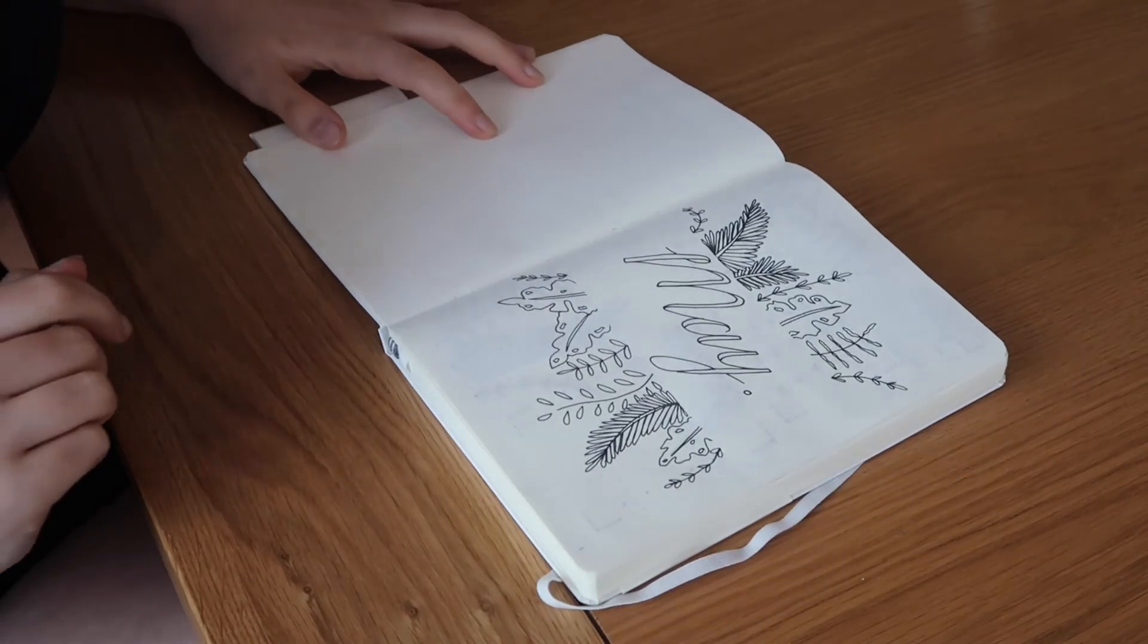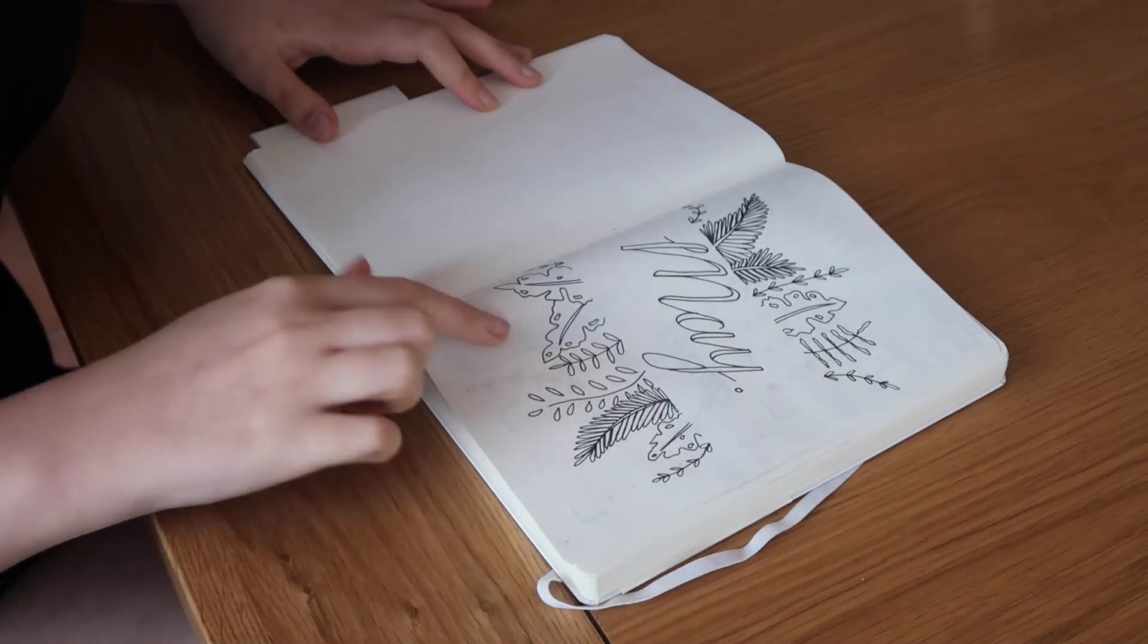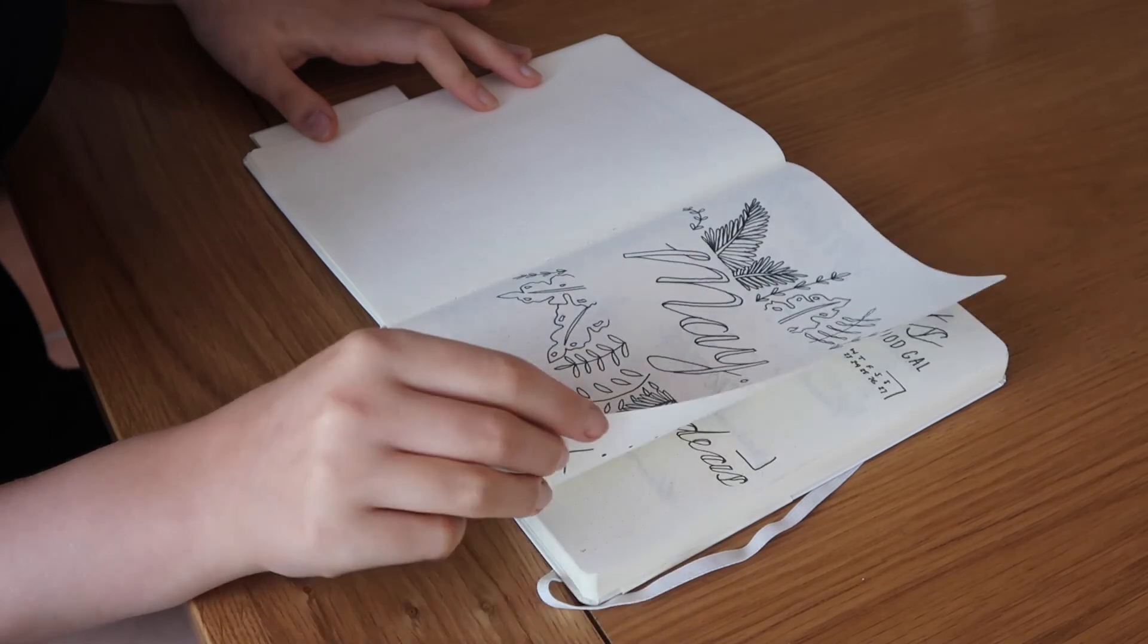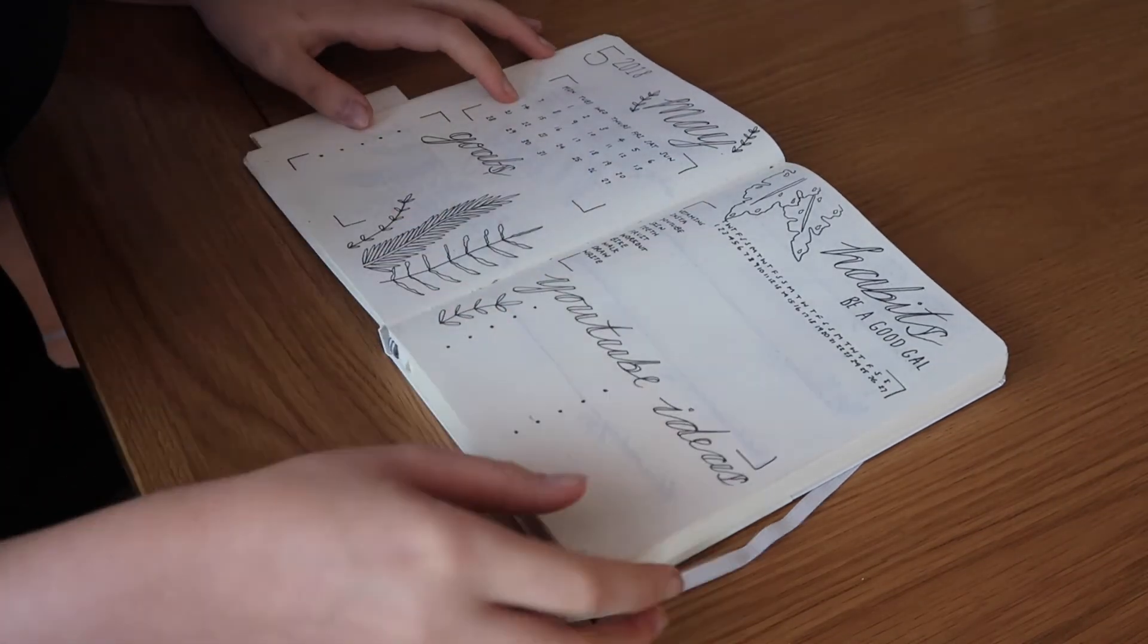So moving on to the flick through. Obviously this is the first page. I really like how it came out. I think the leaves look really pretty and I really like it in black and white.